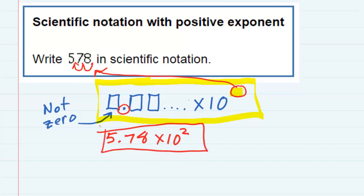For this, since we're just dealing with positive exponents, it's important to notice that 578 is a fairly large number. So that's why in scientific notation, it gets a positive exponent. That'll be important later on when we look at negative exponents.